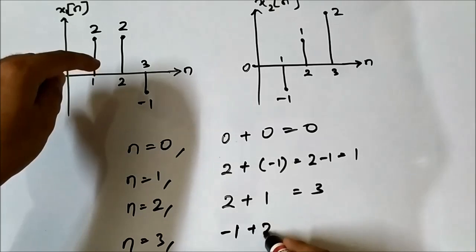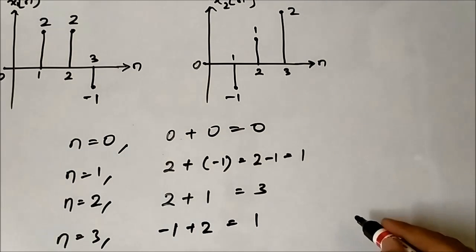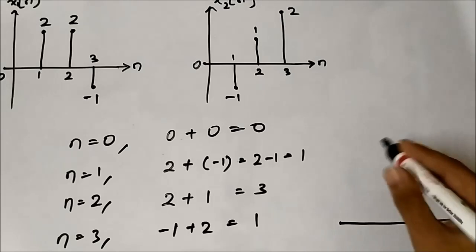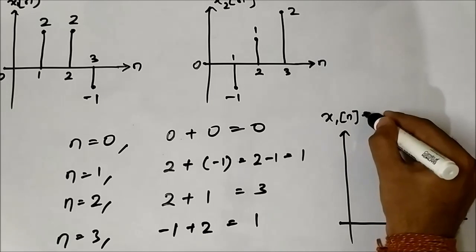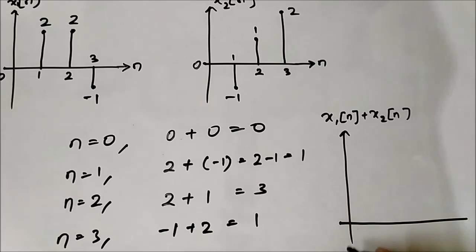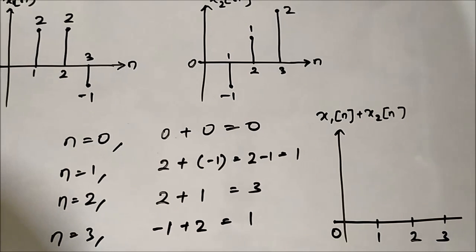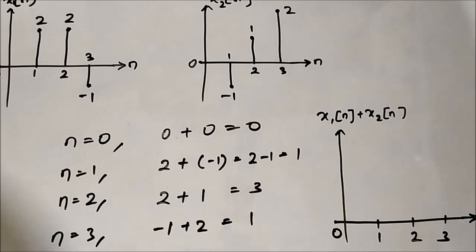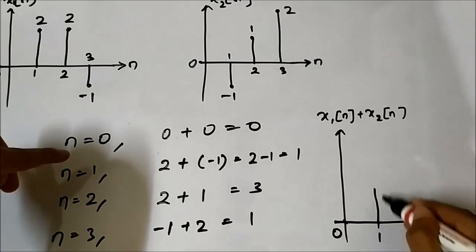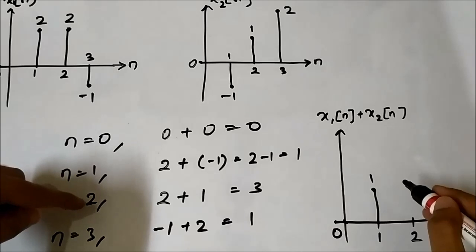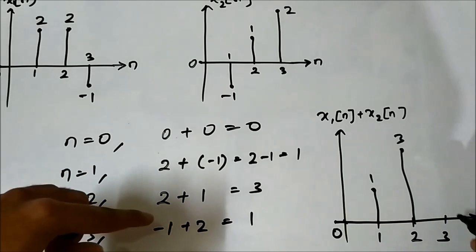At n=3 it is -1 plus 2, which equals 1. Now we draw the resultant signal x1[n] plus x2[n]: at n=0 it is 0, at n=1 it is 1, at n=2 it is 3, and at n=3 it is 1.